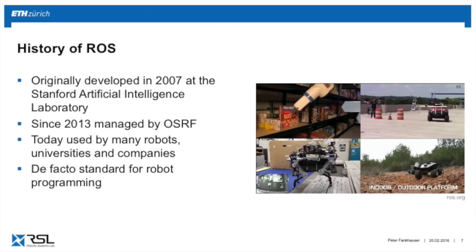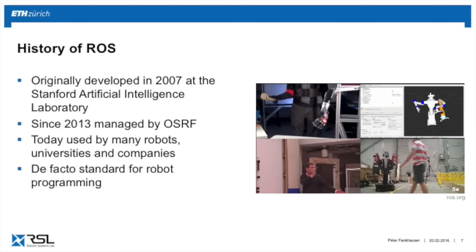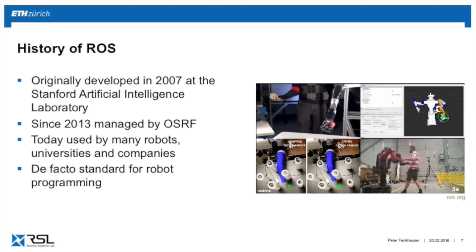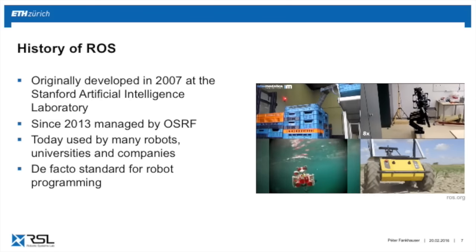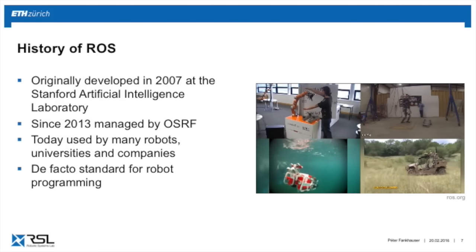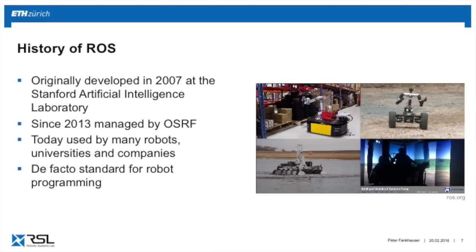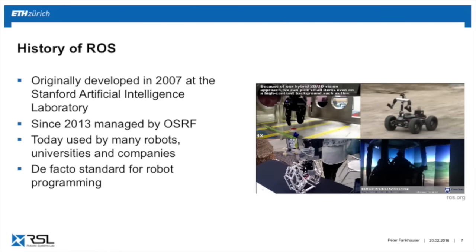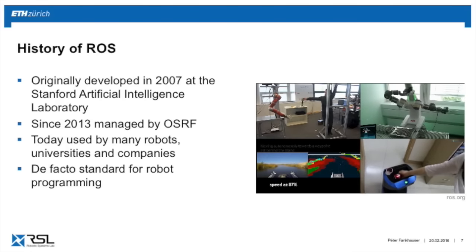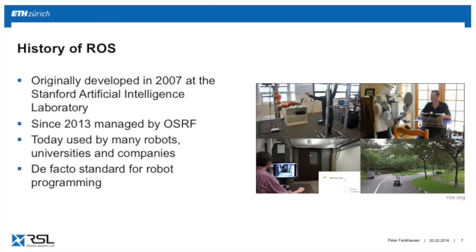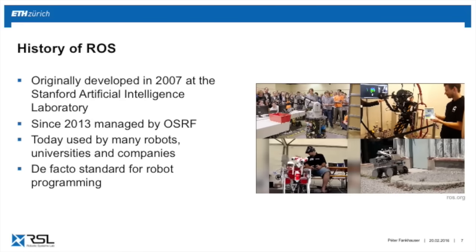A little bit about the history of ROS. It was developed in 2007 at the Stanford Artificial Intelligence Laboratory, then managed by Willow Garage, and since 2013 is managed by the Open Source Robotics Foundation. Today ROS is used by many robots, ranging from universities to companies. For research, it has become a standard for robot programming, and there are pushes in industry to use ROS extensively.